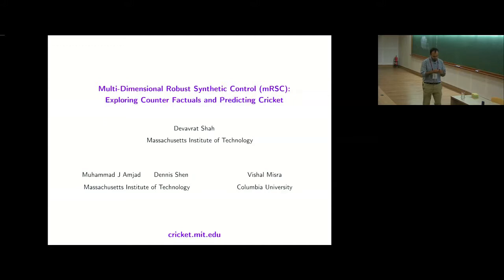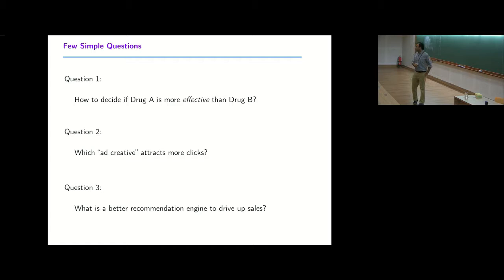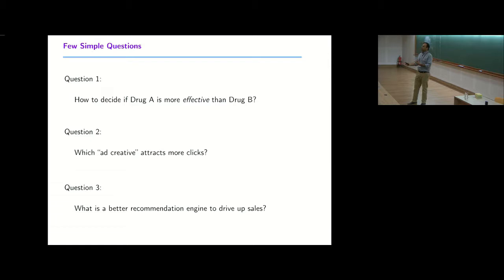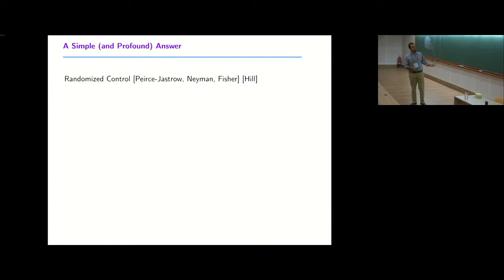To set the context, I'll start with a few simple questions whose answers most people know well. How do you decide drug A is more effective than drug B? Or comparing ad creatives in an online setting? Or better recommendations depending on algorithmic choices? These are classical questions, and the classical answer, as we know, is randomized control.